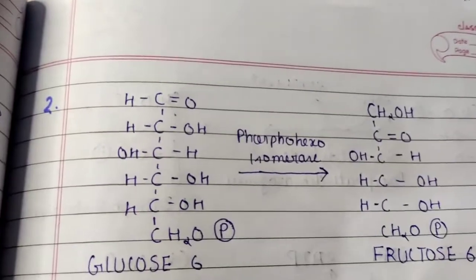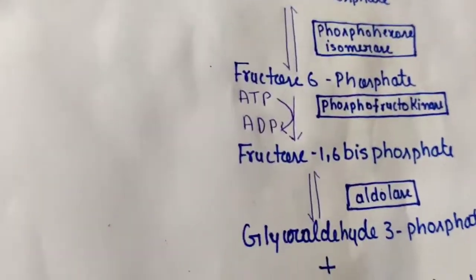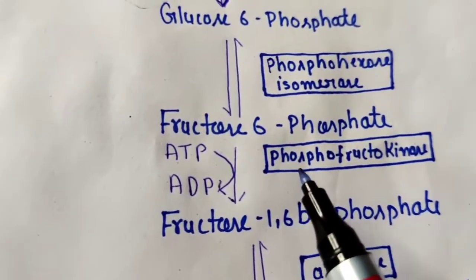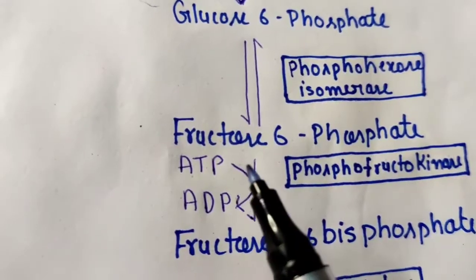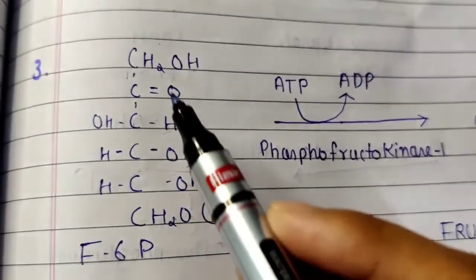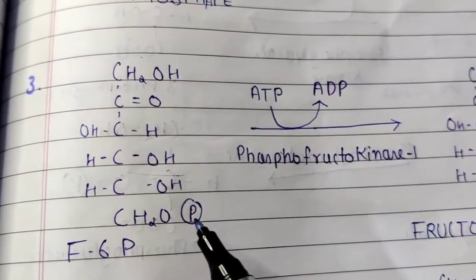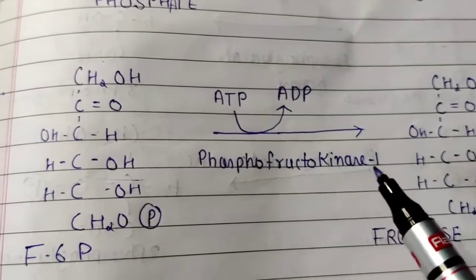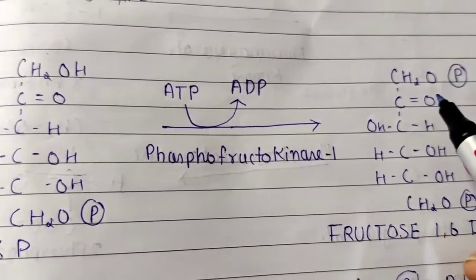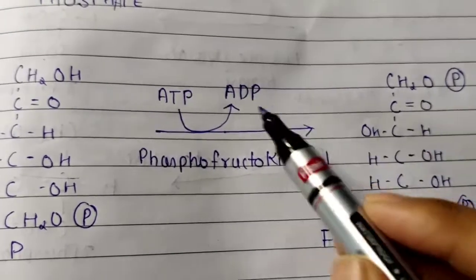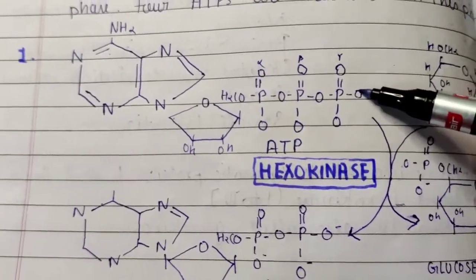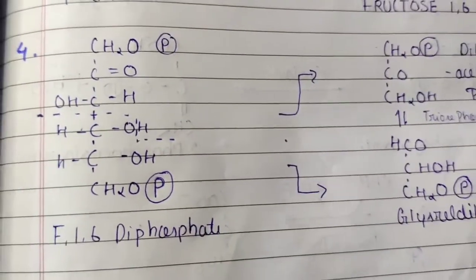The next step converts fructose-6-phosphate to fructose-1,6-bisphosphate. The enzyme that works here is phosphofructokinase. In this step, ATP is consumed and converted to ADP, as a second phosphate group is added to fructose-6-phosphate, producing fructose-1,6-bisphosphate. This is still in the preparatory phase, so ATP is consumed.